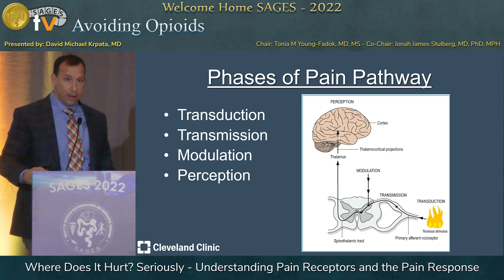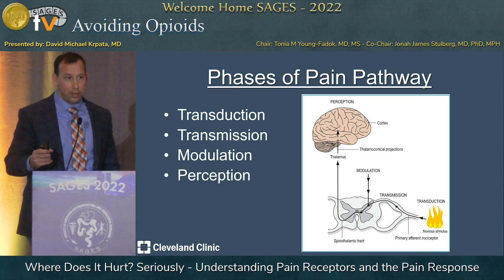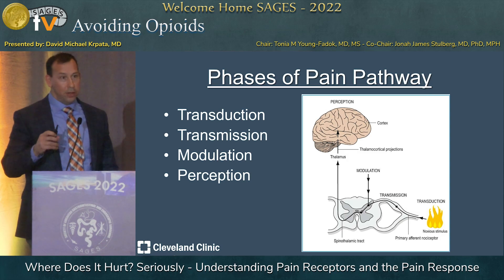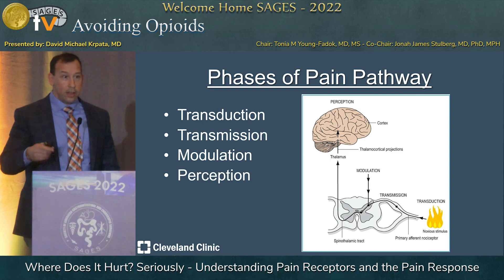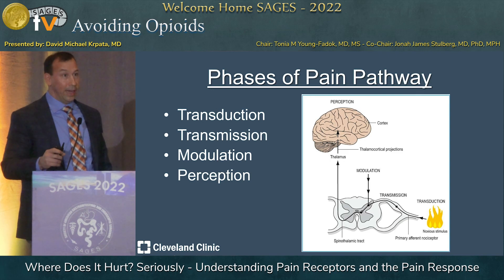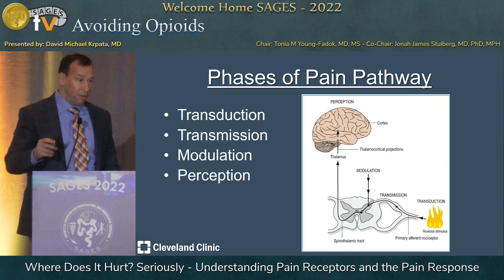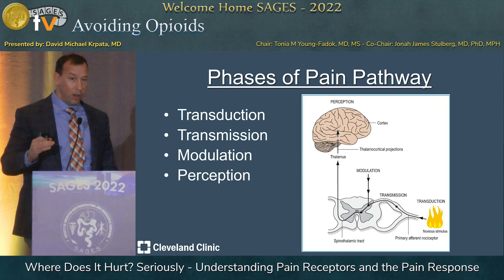The best way to describe modulation: if you were in a burning building and it was important for you to get out, you might come out finding that you have a major burn on your arm but didn't realize it until you were outside, because your brain told you that something was more important than the pain signal — and that's done through modulation. And then finally, perception of pain, which is extremely complicated, happening within the cortex, and I'm not going to go into that because I only have 10 minutes.